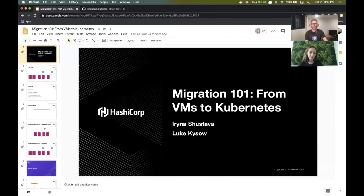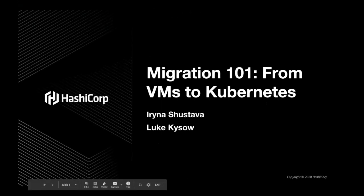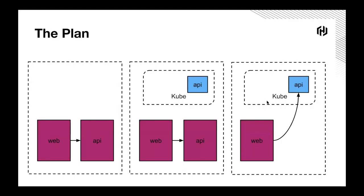So let's share a screen and get into the slides. This talk today is a Migration 101 from VMs to Kubernetes. We're going to have two applications: the web application and the API application, both running on VMs. Then we'll deploy the API application onto Kubernetes, deal with the routing so the web can route to API, and swap routing over in a no-downtime migration so the API service is now running on Kubernetes.